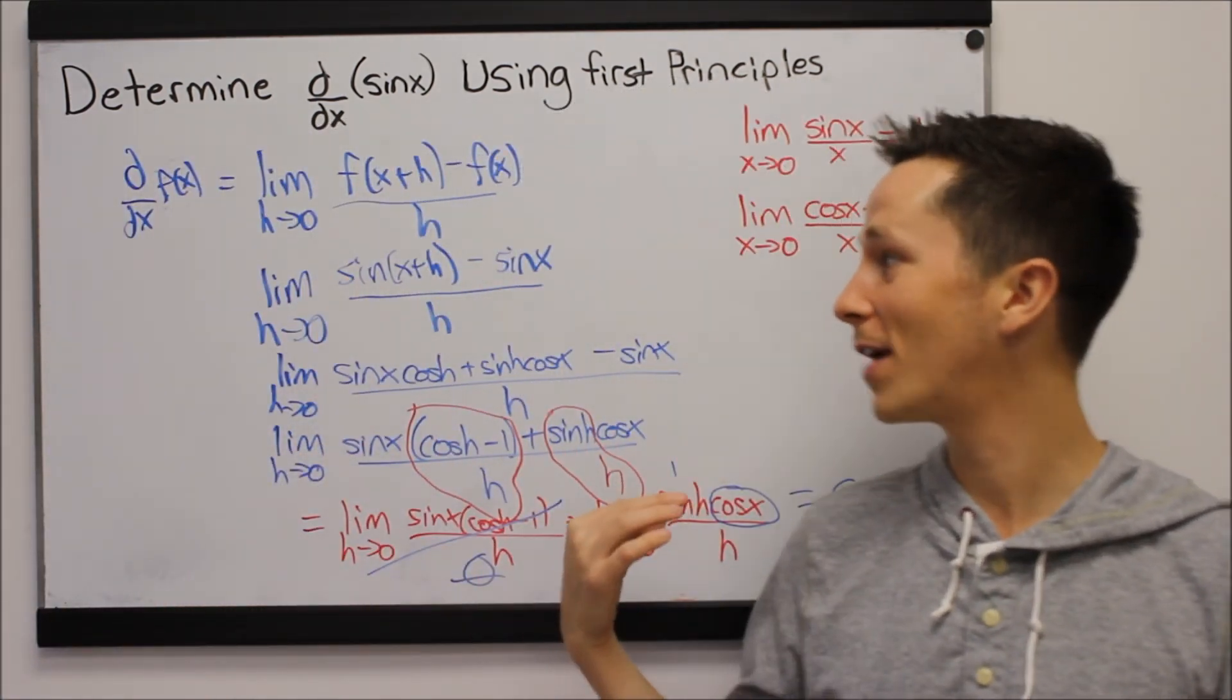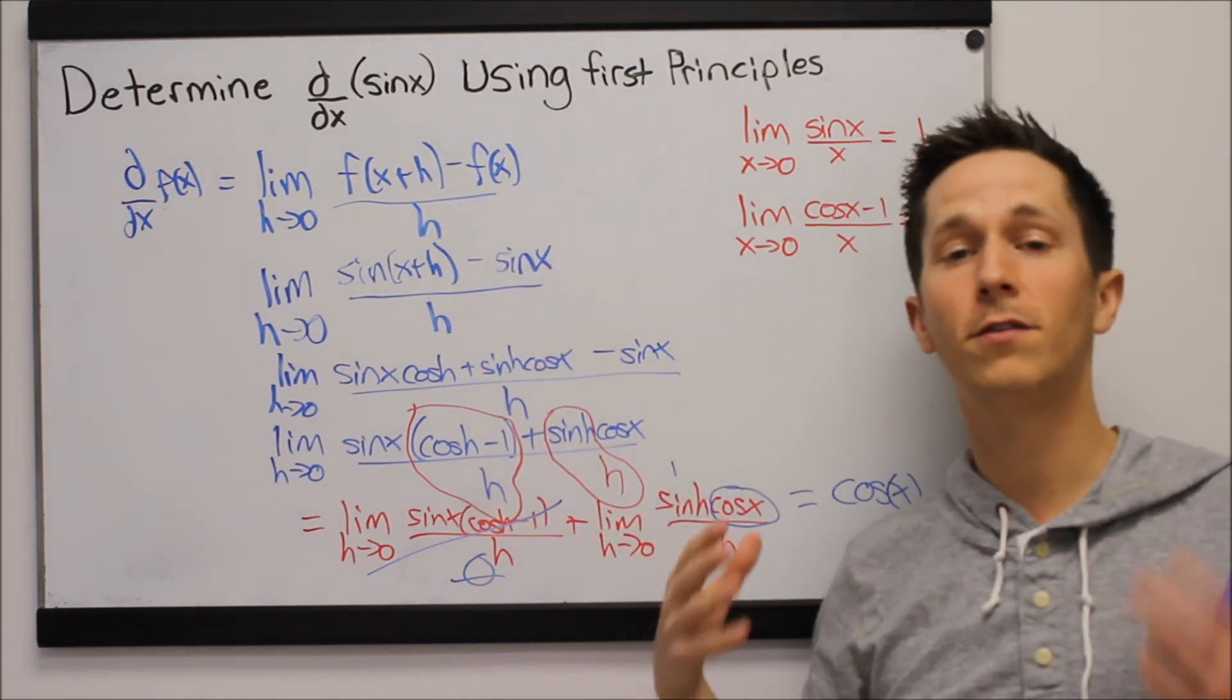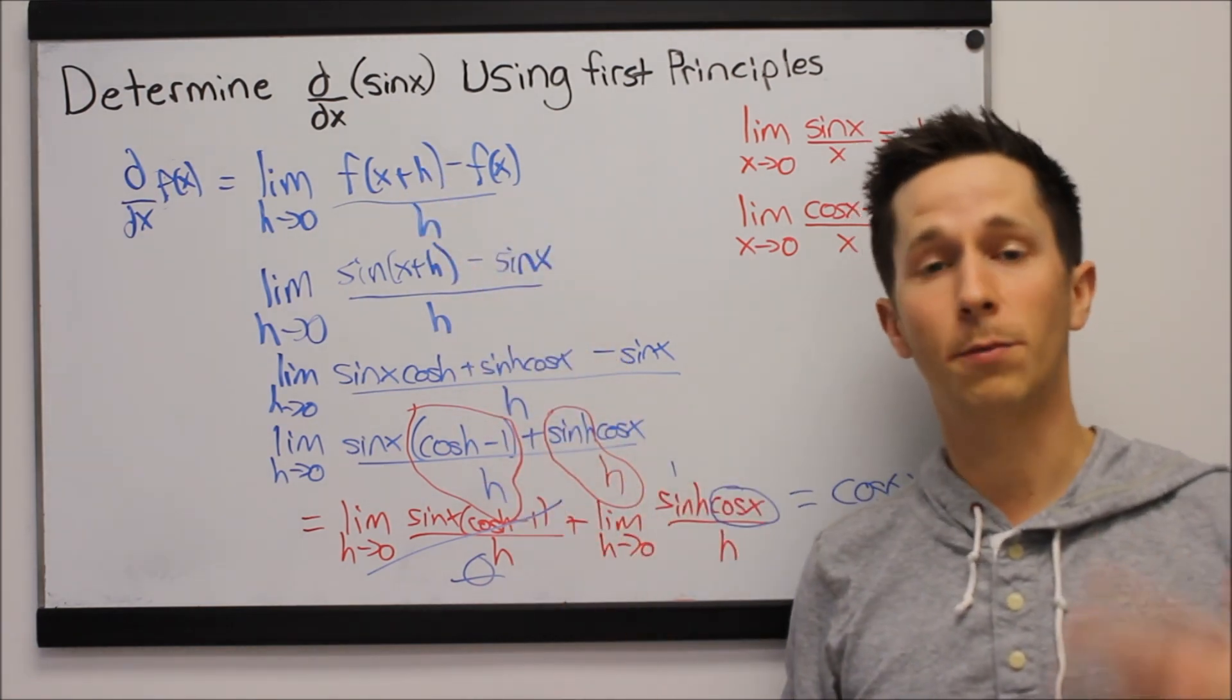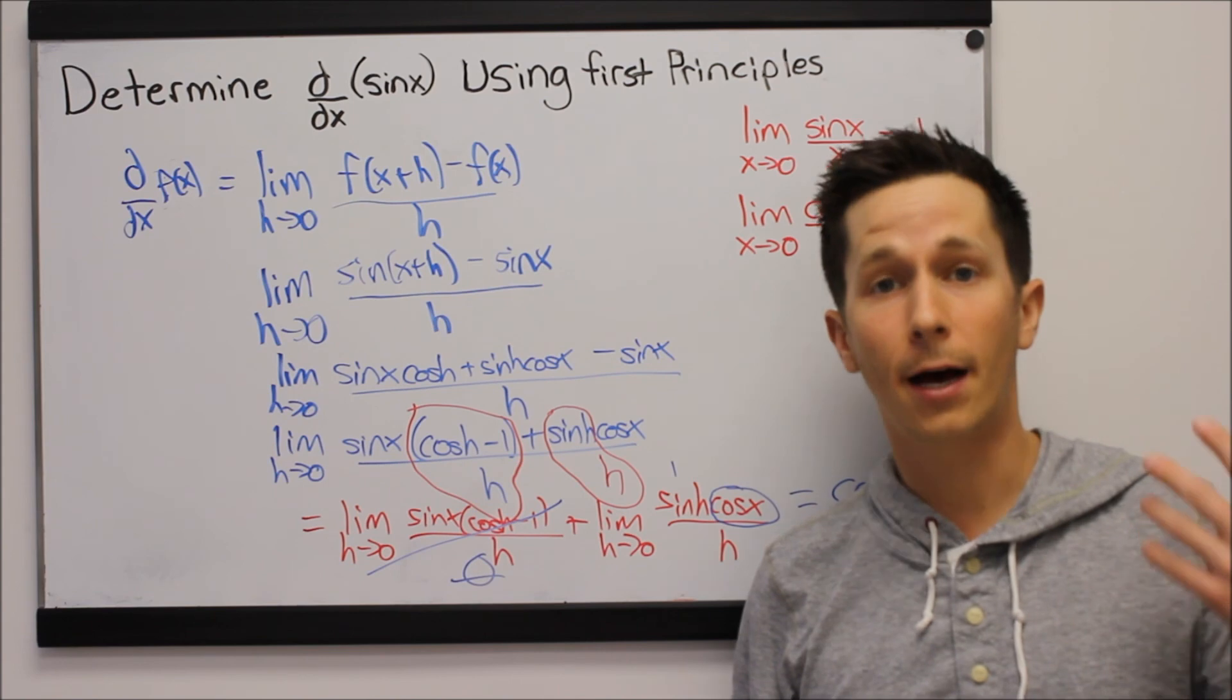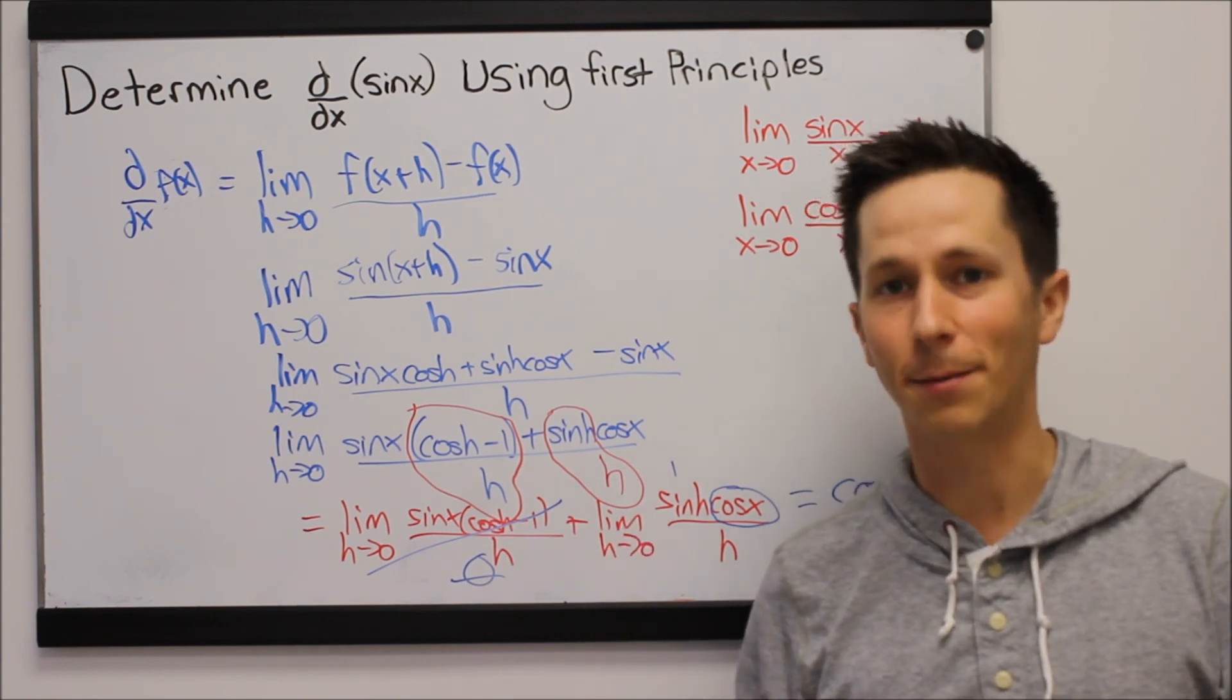And that proves our shortcut derivative that we know. The derivative of sine x is cos of x. So that's a nice way of using the definition of the derivative to prove one of the trig derivatives that we already learned just by looking at a table.